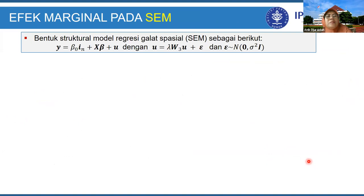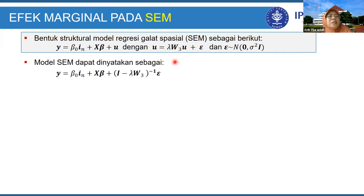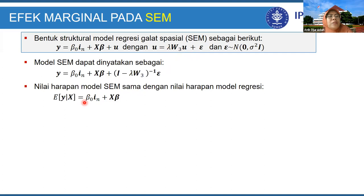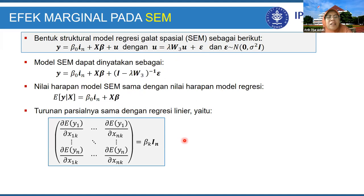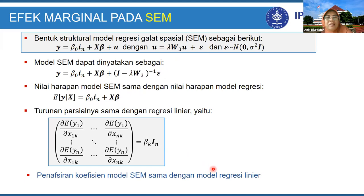Sekarang kita lihat model SEM. Kita tarik modelnya secara umum, satukan ke kiri, kemudian tentukan nilai harapan Y dengan syarat X. Epsilon-nya 0 sehingga nilai harapannya sama dengan komponen deterministik, dan ini sama dengan nilai harapan regresi. Turunan parsialnya sama dengan regresi, sehingga model SEM ini tidak akan mempunyai limpahan.